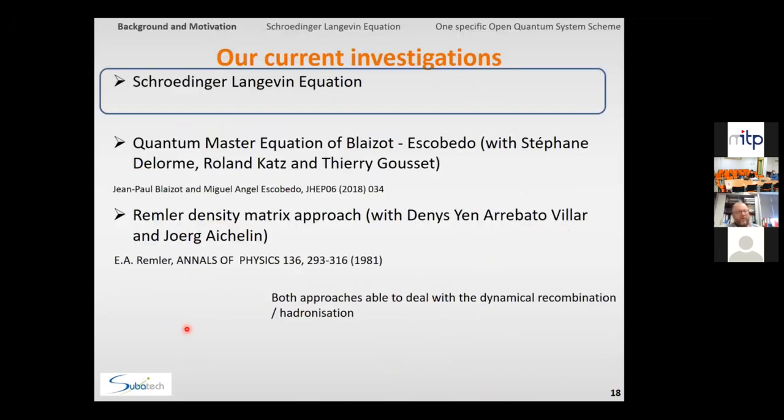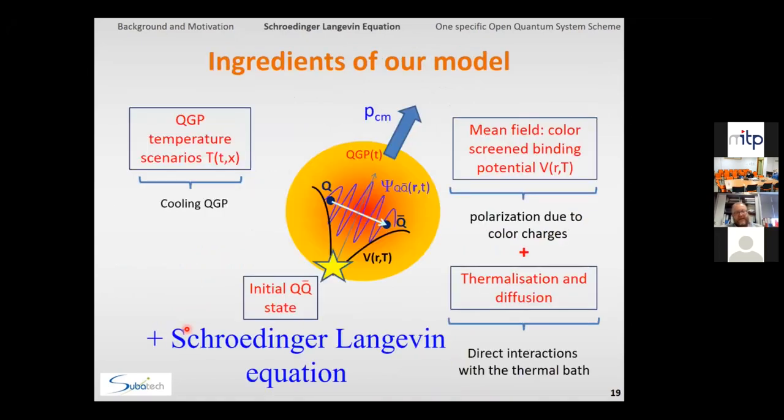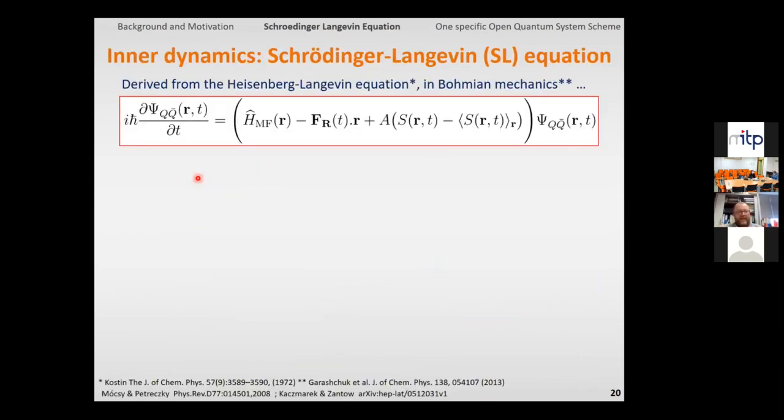Here I would like to present the first approach that we have tried, the Schrodinger-Langevin equation, that is an effective approach to deal with this, and then basically the Schrodinger-Langevin equation is an equation that you provide here on the top of an evolving QGP scenario, and it typically looks like this.